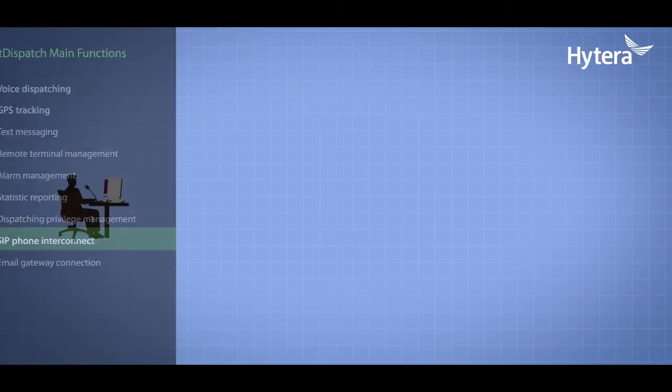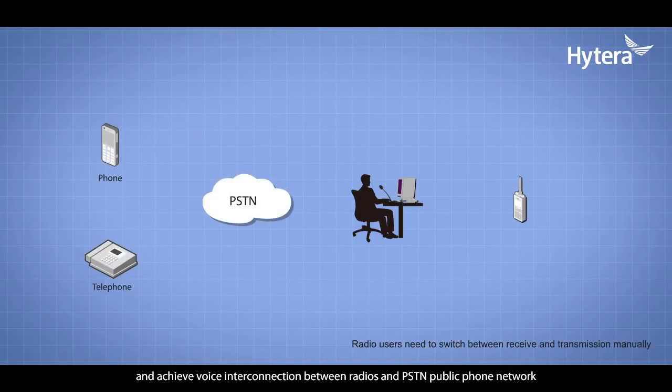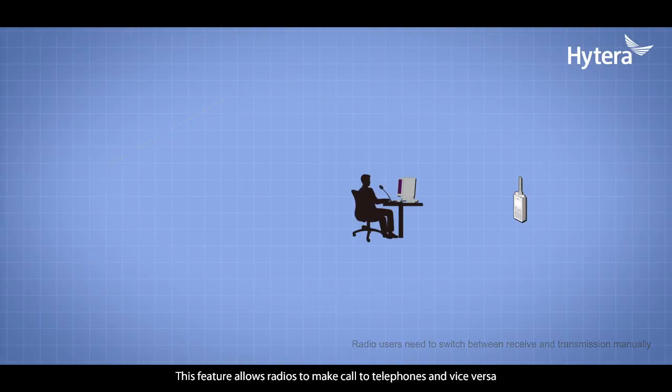SIP Phone Interconnect: Smart Dispatch supports SIP protocol, connects with IP PBX server, and achieves voice interconnection between radios and PSTN public phone network. This feature allows radios to make calls to telephones and vice versa.